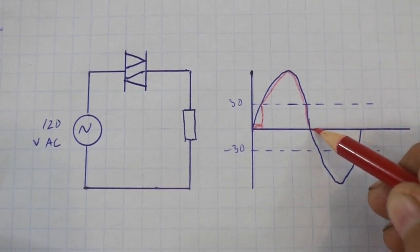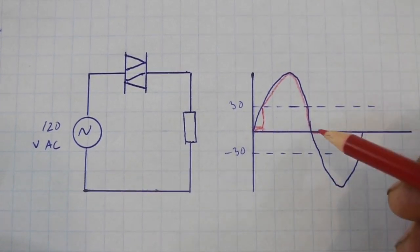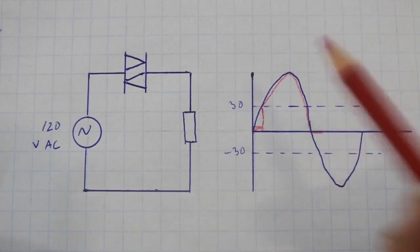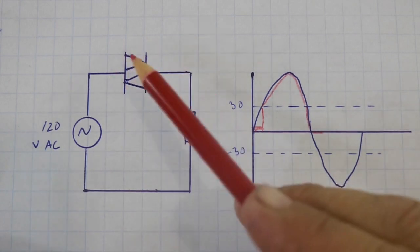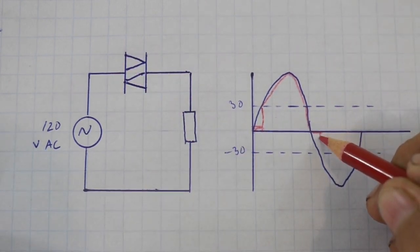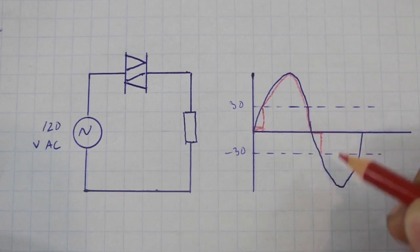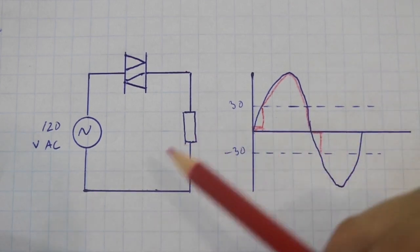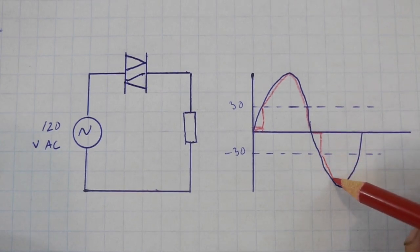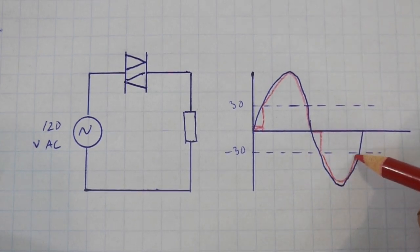So there is no current until we reach again the value of 30 volts negative. Remember that it has no polarity. So again when the voltage is at the minus 30 volts it starts to flow the current again and we have the second part of the cycle.